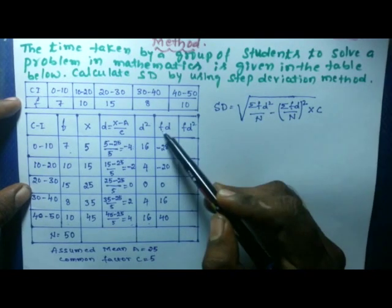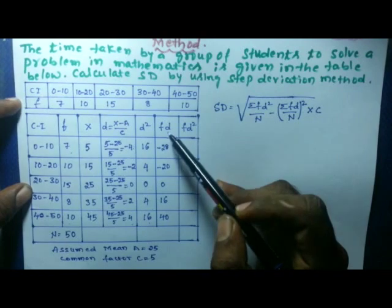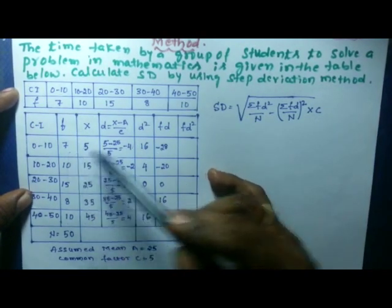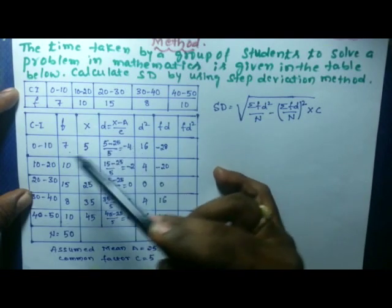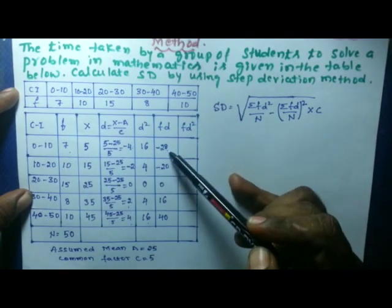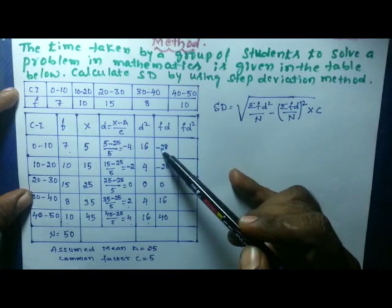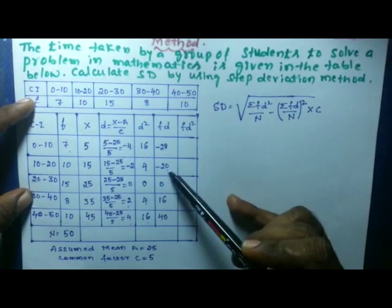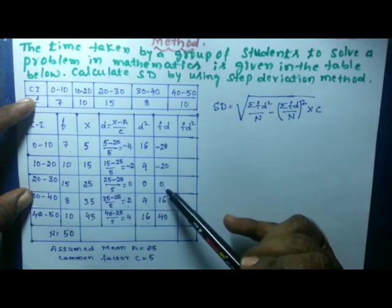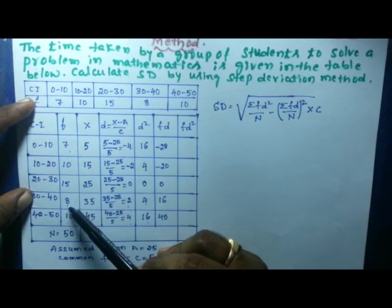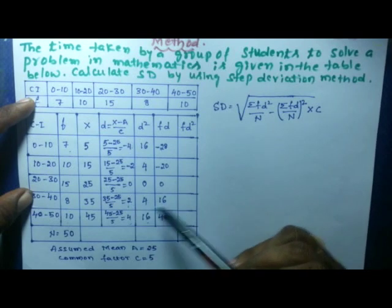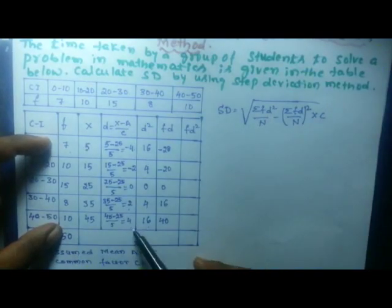The next column is fd: multiply each frequency f by the corresponding d value. So: 7×(−4)=−28, 10×(−2)=−20, 15×0=0, 8×2=16, 10×4=40.